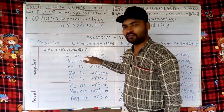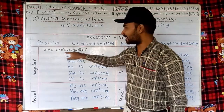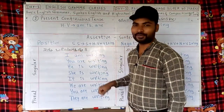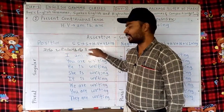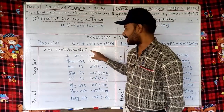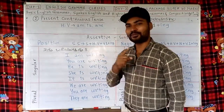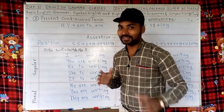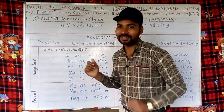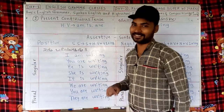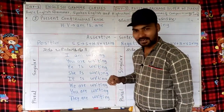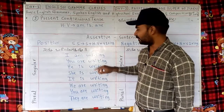The meaning of this is: I am writing — Naanu Baryuti Dene. If you know Kannada, the Kannada meaning helps you a lot to understand the sense or the time of these tenses.